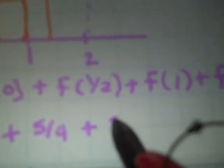So the area is one half the sum of f of 0, which is 1, plus f of a half, which is 5 fourths, plus f of 1, which is 2, plus f of 3 halves, which is 13 fourths.